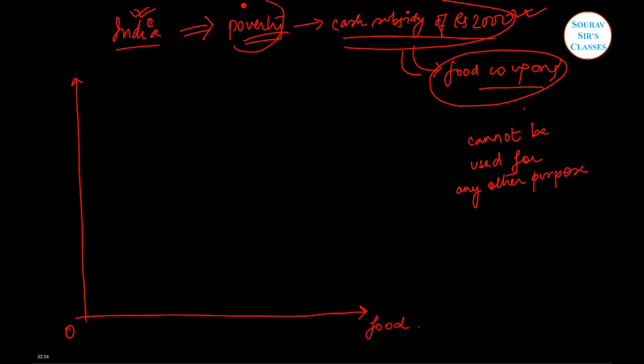On the vertical axis I'll measure all other commodities, and this can include money even. So this is our initial budget line. It will be downward sloping.